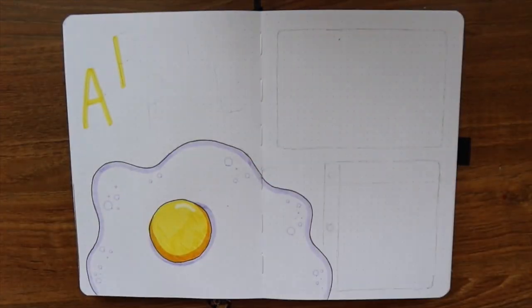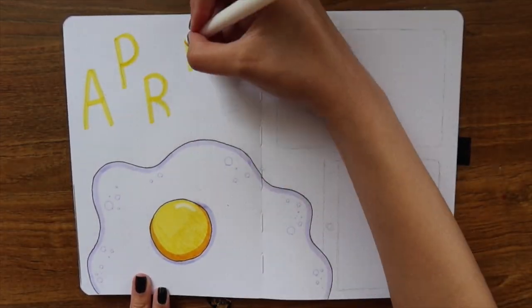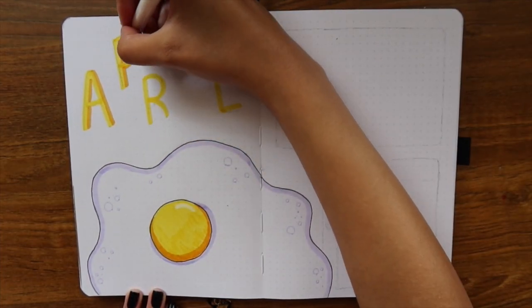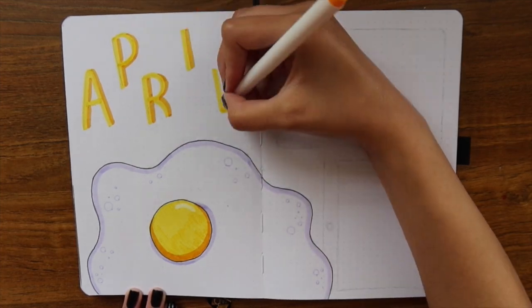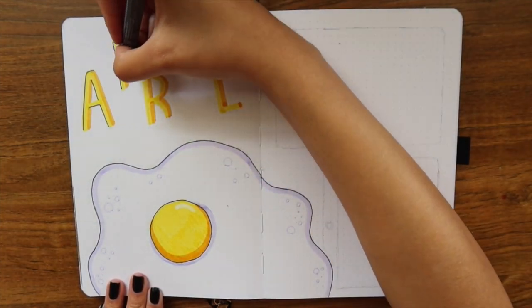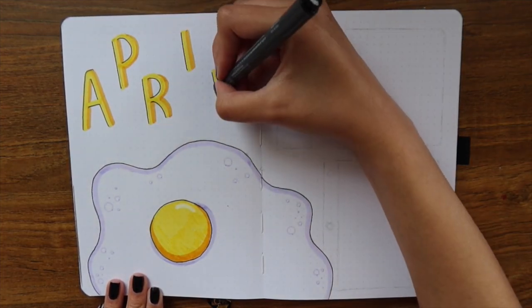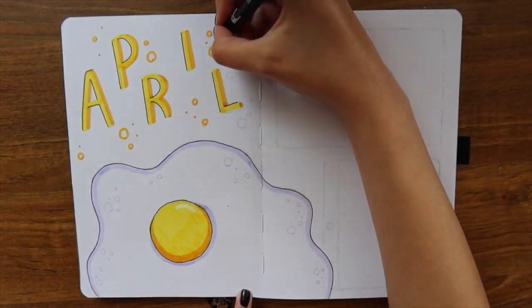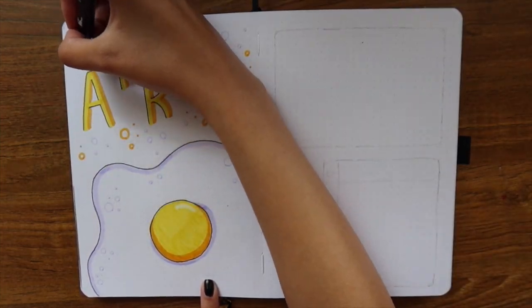Anyways, enough about my rambling. I hope you enjoy today's video. For April's theme, I decided to go with eggs. You may be thinking, why would you choose eggs? Well, if you have not watched my last video, it was a sticker haul and I got a whole bunch of new stickers. One of the sticker sheets I bought was egg-themed and I just thought it was super cute.